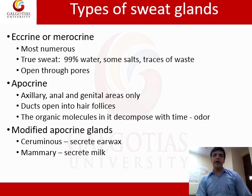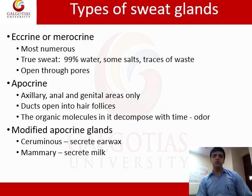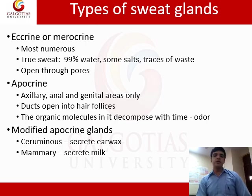Types of sweat glands: eccrine or merocrine glands are the most numerous — the true sweat glands — secreting sweat that is 99 percent water along with some salts and traces of waste, opening through pores. Apocrine glands are located in the axillary, anal, and genital areas; their ducts open into hair follicles, and organic molecules in the secretion decompose over time, producing body odor. Modified apocrine glands include ceruminous glands, which secrete earwax, and mammary glands, which secrete milk in females.